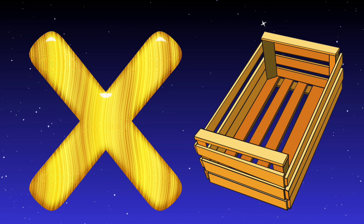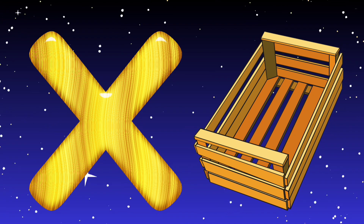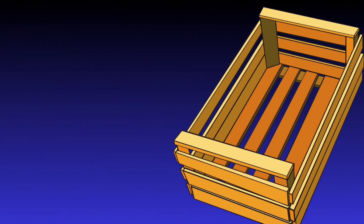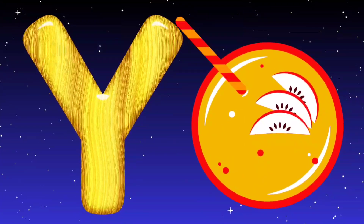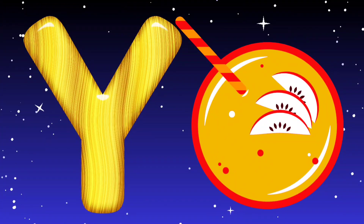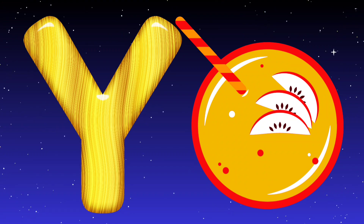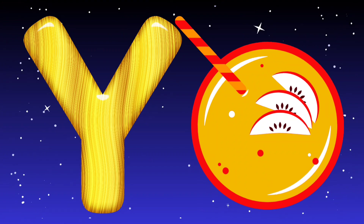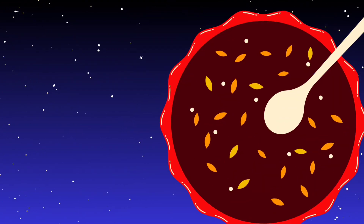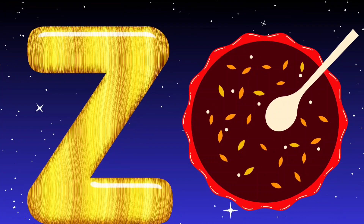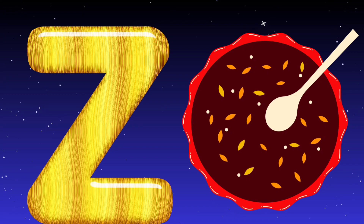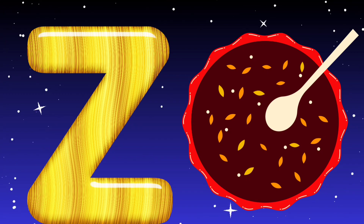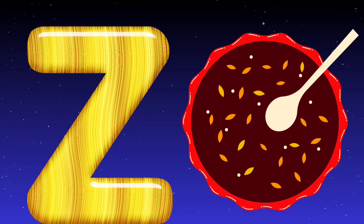X is for box. Box mean dibba. Y is for yellow. Yellow mean pila. Z is for zubi. Urdu mein zubi.